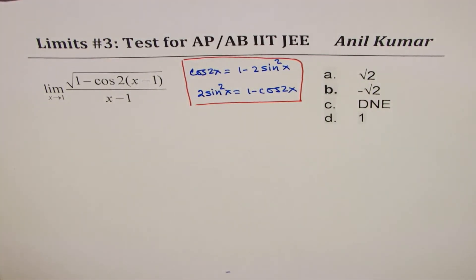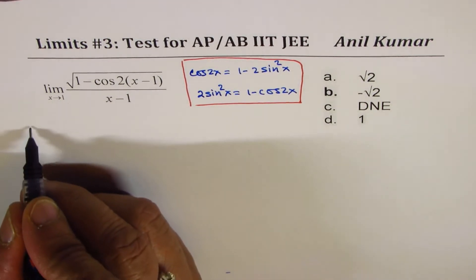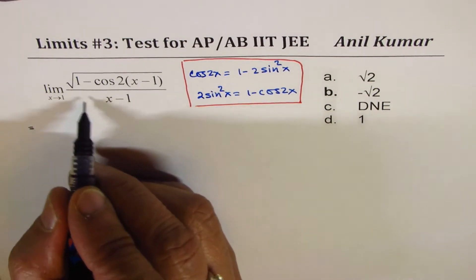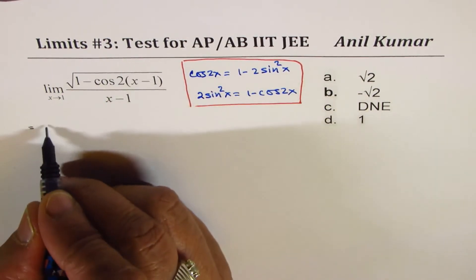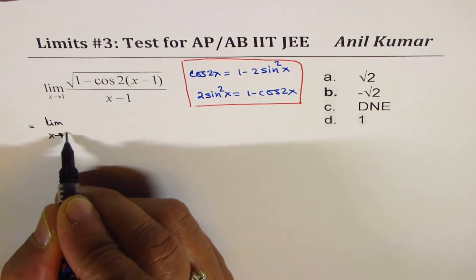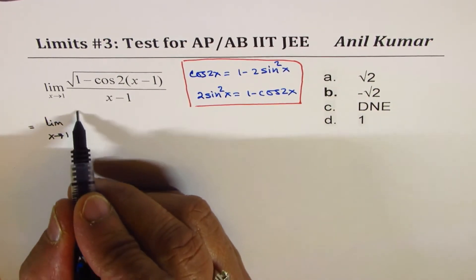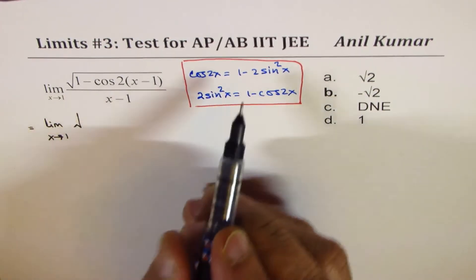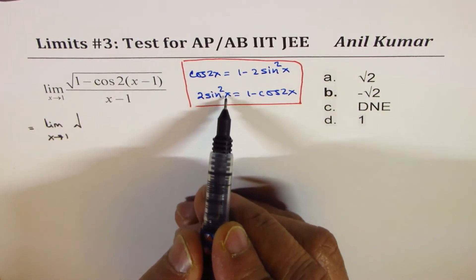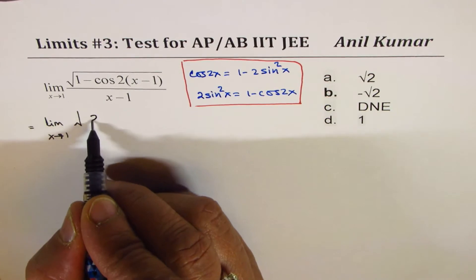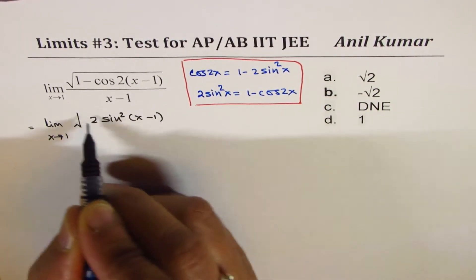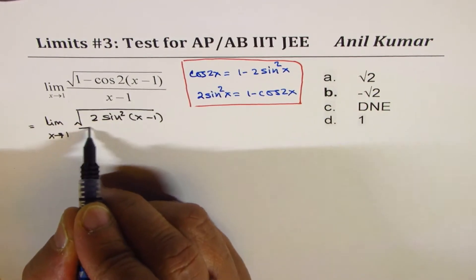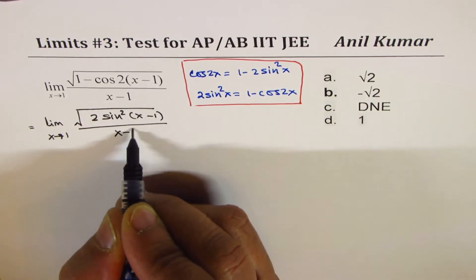So let's rewrite the limit which is given to us. Limit x approaches 1, and the numerator becomes 2 sine square (x-1), and the denominator is x minus 1.